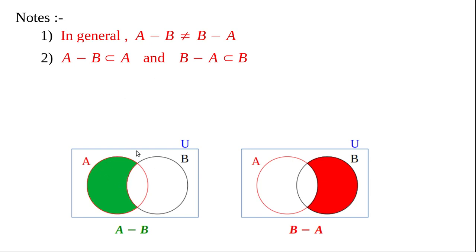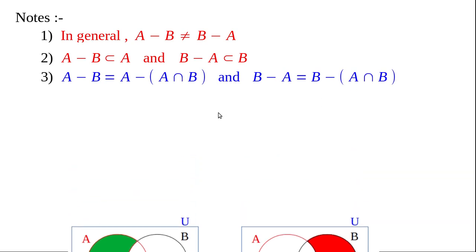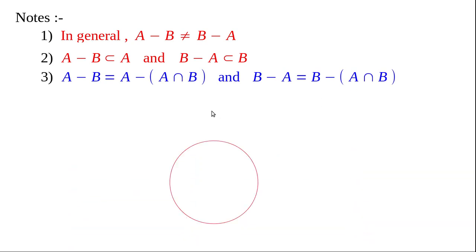Third note: to get A minus B, subtract A intersection B from A. The portion denoting A intersection B — to get A minus B you have to subtract A intersection B from A. So A minus B equals A minus (A intersection B). Similarly, B minus A equals B minus (A intersection B).